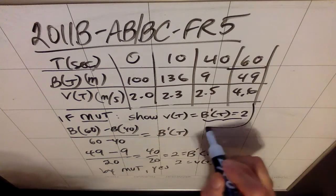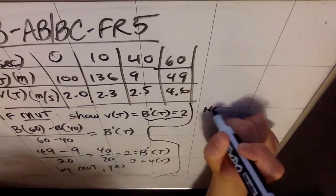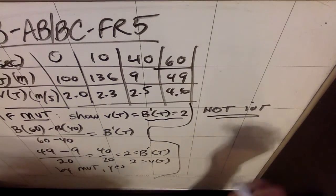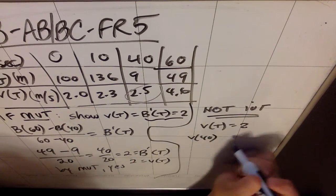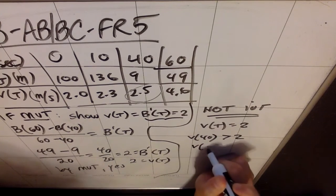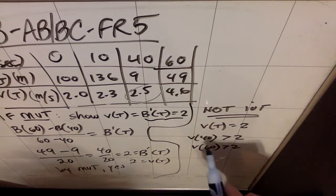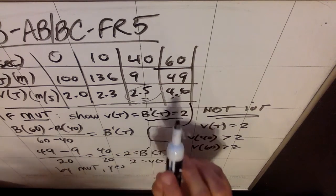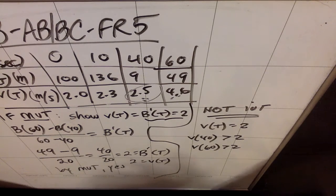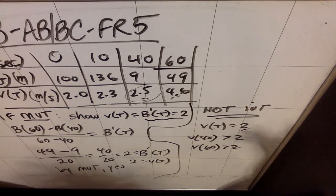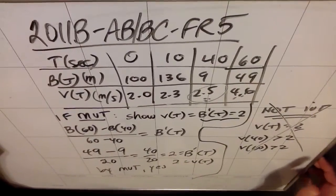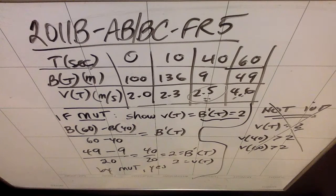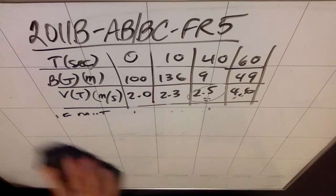Just to show you, if this had been an intermediate value theorem problem, it's not. Here's how I can see that. If I were trying to show that V(t) had to be 2 in this window, I would look at V(40). But V(40) is greater than 2. And I would look at V(60) and see, oh, it's also greater than 2. So the IVT doesn't apply. If one of these two values had been below 2 and the other one was above 2, then I could use the IVT because it says if you start below the number 2 and end above the number 2, then you have to cross the number 2, or vice versa. So the IVT does not apply here. When you hear must something be true, it's almost always the mean value theorem or the intermediate value theorem. Those are two big ones to know walking into your calc test.